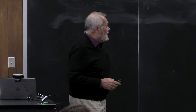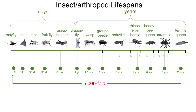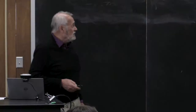As a quick survey of insects and arthropods: mayflies live maybe two days; moths a couple of weeks; mites 30 days; fruit flies similar; grasshoppers six months; large dragonflies up to a year; a wasp maybe a year and a half; ground beetle a couple of years; rhinoceros beetle four years; a tarantula around ten years; and termite queens several decades. That's a 5,000-fold difference in lifespan among insects.